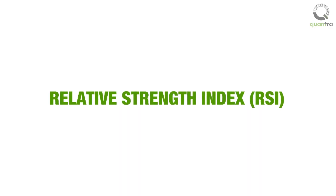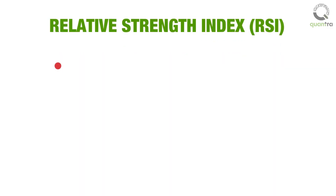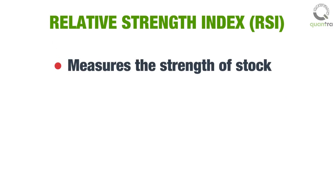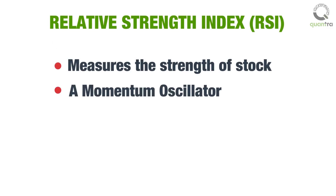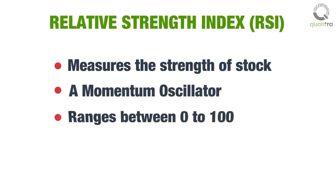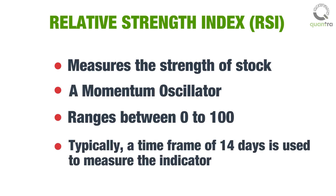The first indicator we will discuss is Relative Strength Index, or RSI in short. It measures the strength of a stock. It is considered as a momentum oscillator which measures the speed and change of price movements. RSI is measured in a range of 0 to 100. Typically, a time frame of 14 days is used to measure the indicator.